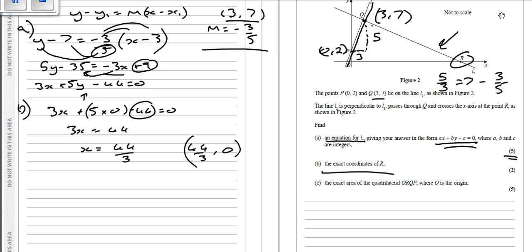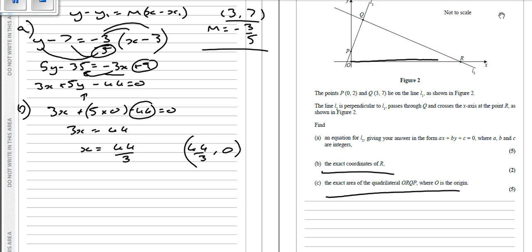Now the next thing we're going to do is work out the exact area of the quadrilateral ORQP. Again, if we have a look at this here. So it's that thing there, which looks awkward. But what we can do is we can work out the area of the entire triangle here. It shouldn't be too much hassle. And then we're going to get rid of this triangle here. Then we're left with ORQP.